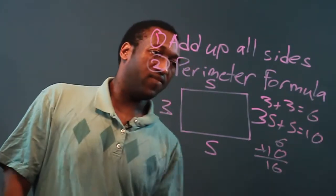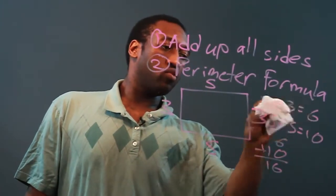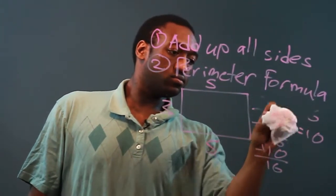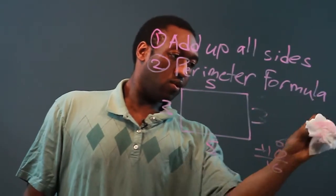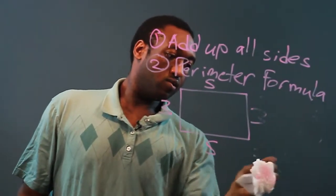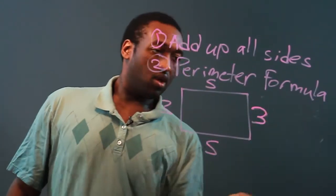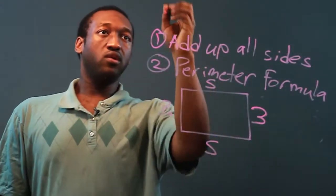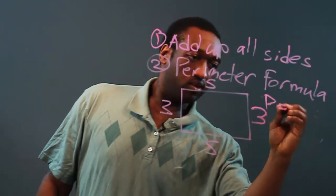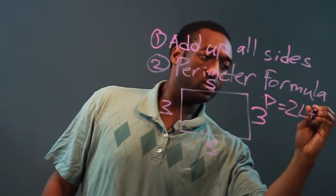Another way to find a perimeter is to use a perimeter formula. Now, for a rectangle, the perimeter is two times the length plus two times the width.